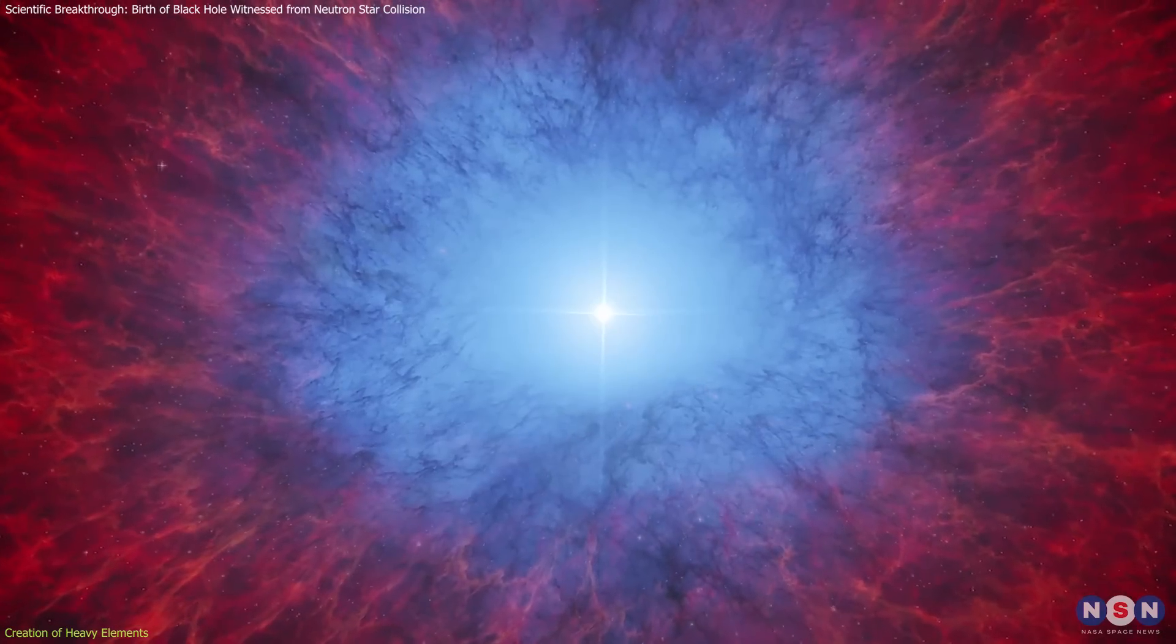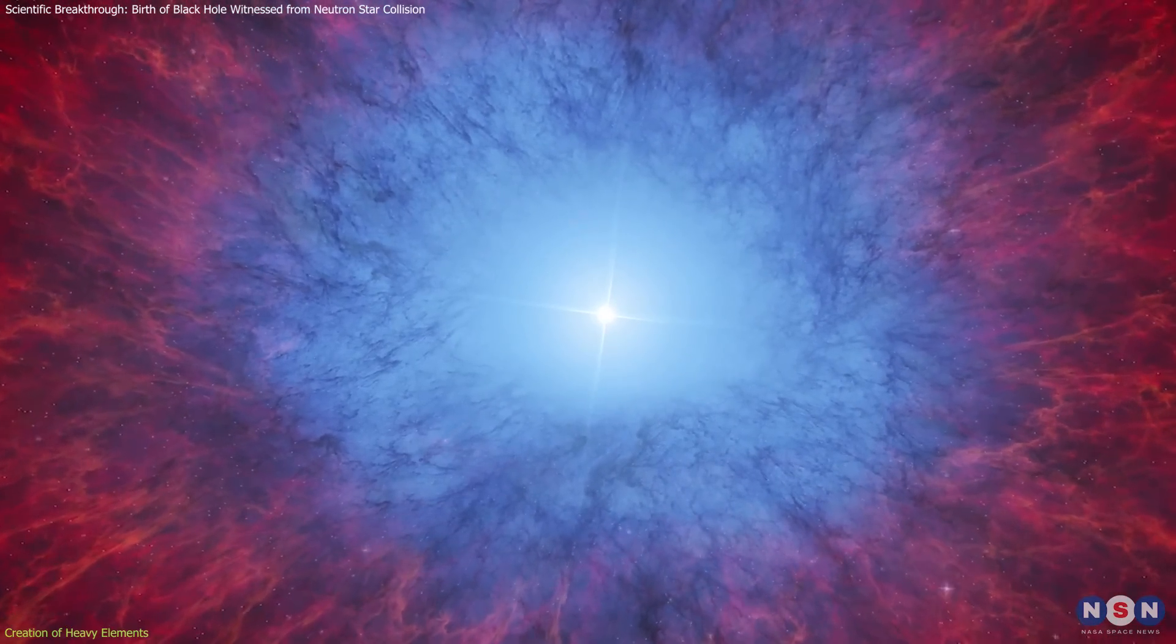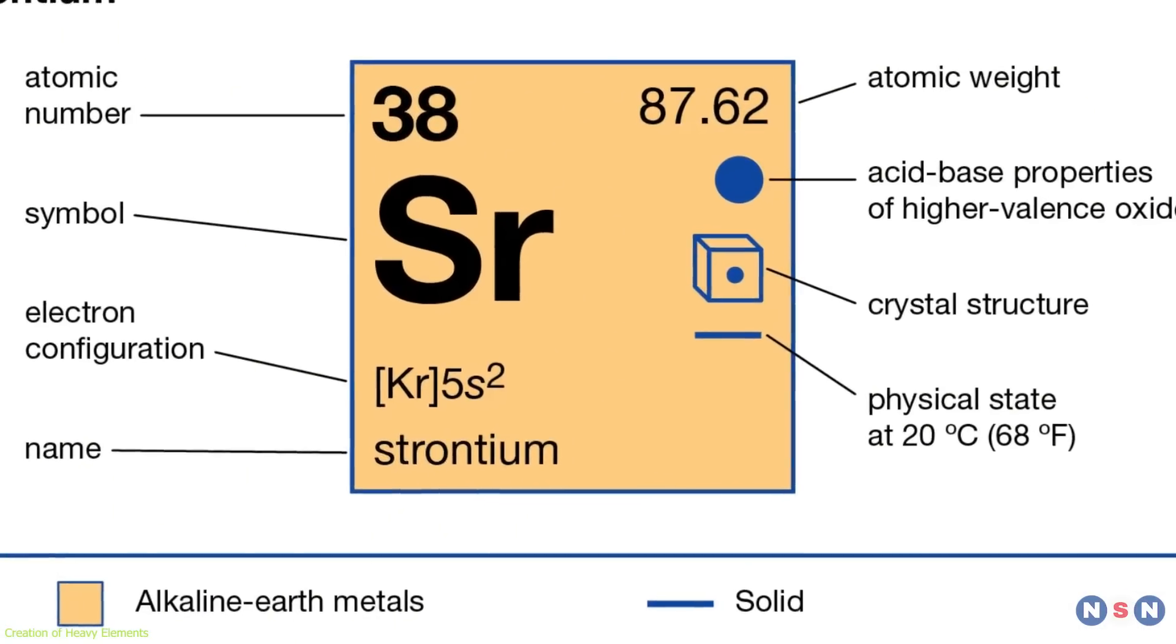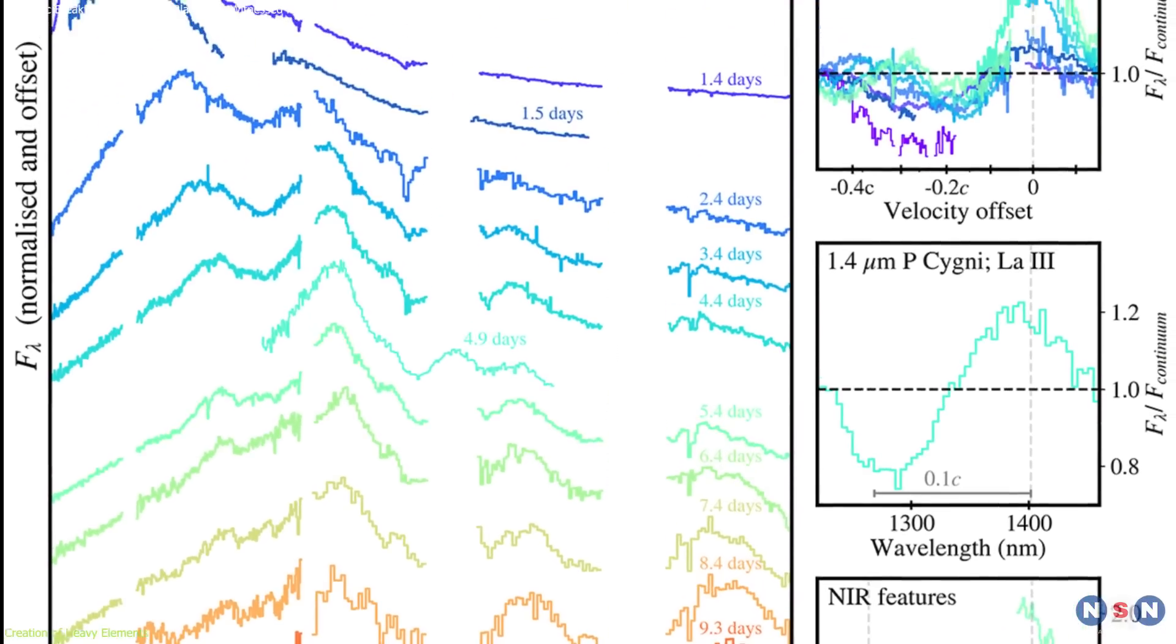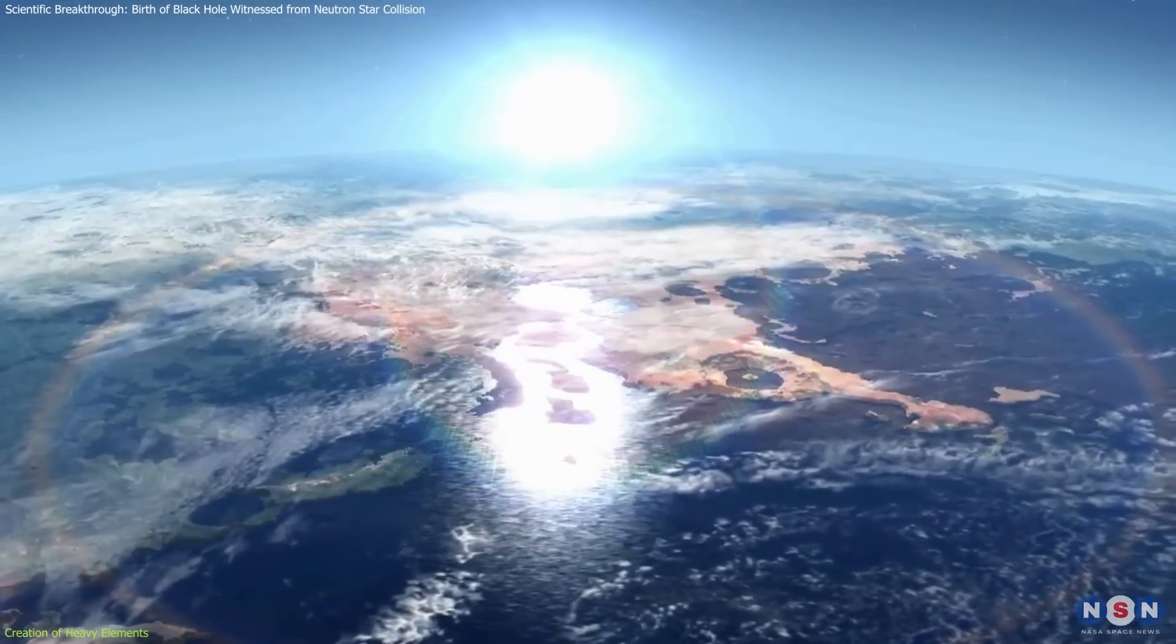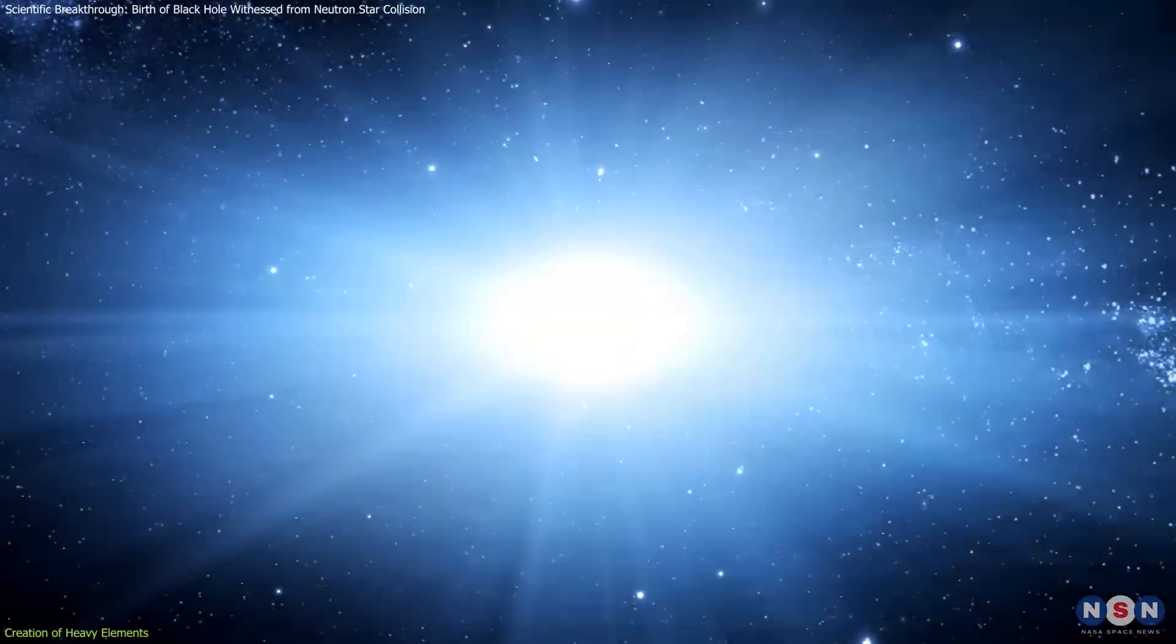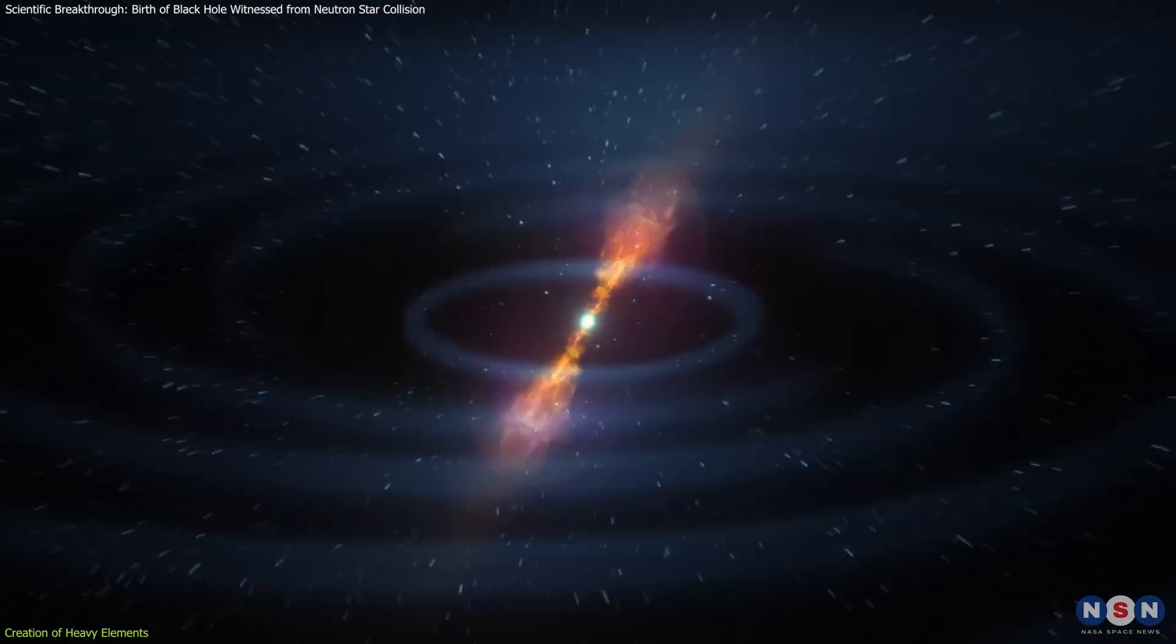For the first time, scientists could observe these heavy elements in the cooling plasma left behind after the collision. Specifically, they detected elements like strontium and yttrium in the aftermath of the explosion, providing evidence that other, even heavier elements were likely created during this event. These observations reveal a lot about how precious metals and other rare elements found on Earth are formed. That gold in a piece of jewelry, for instance, likely began in an event like this, in the violent collision of two neutron stars billions of years ago.